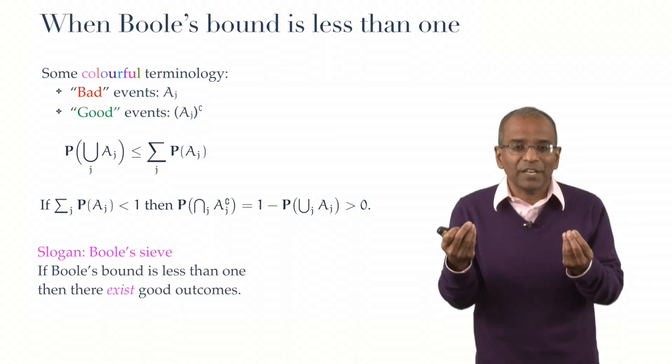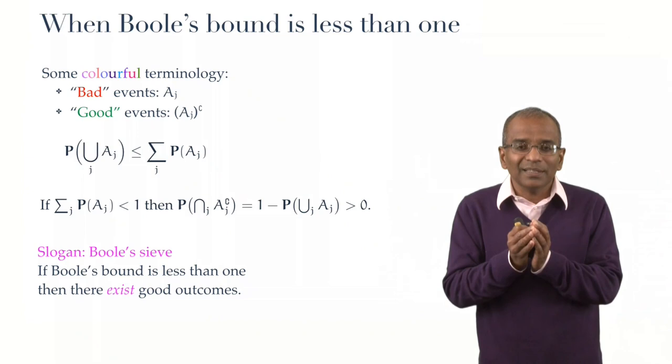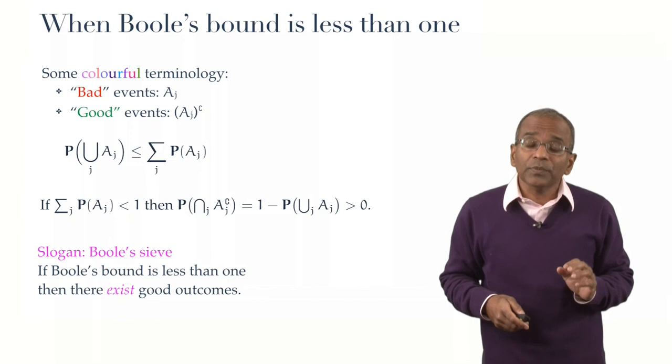And we will promptly codify it in a slogan. We will call it Boole's Sieve Theorem. We are fishing in a probabilistic pond. We are hunting for a probabilistic needle in a probabilistic haystack. And we don't know if it's there. But Boole's Sieve tells us that if the sum of probabilities is strictly less than one, even if it's quite large, the sum could be, say, 99%.